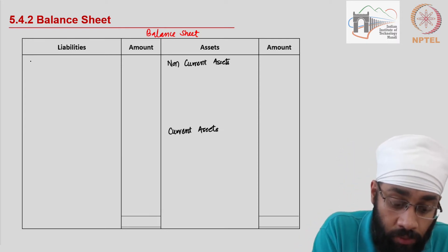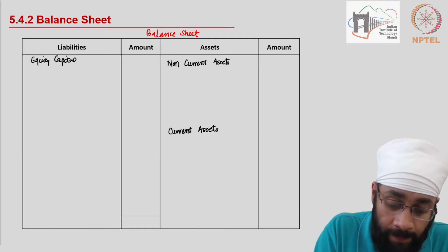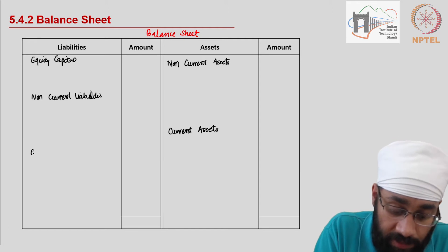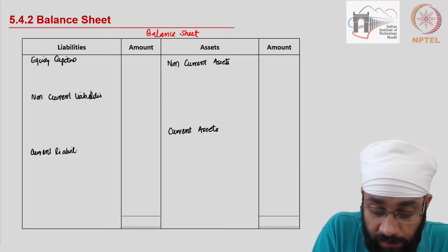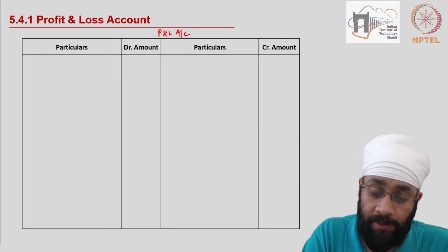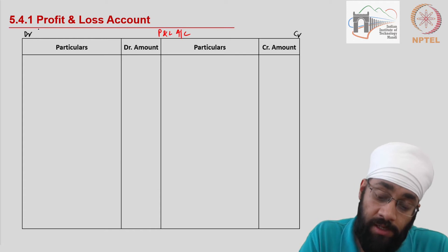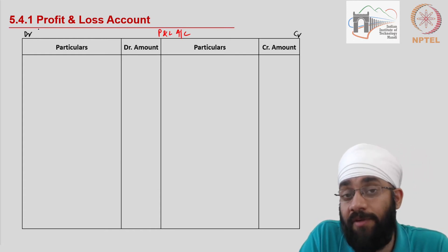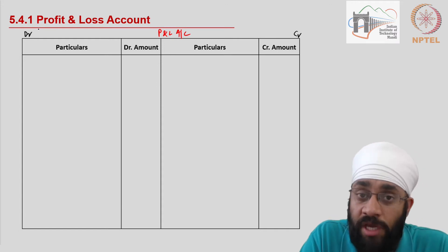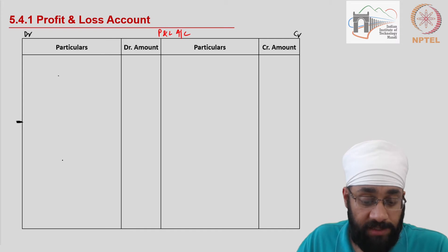On the liability side we are going to have shareholder capital, also called equity capital, then non-current liabilities, and then current liabilities. This format has to be followed whenever you are preparing a balance sheet for any company. As far as the income statement or profit and loss account is concerned, for the account form we follow two sections - direct expenses and indirect expenses.